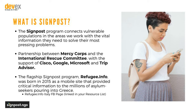The Signpost Program connects vulnerable populations with the vital information they need to solve their most pressing problems. It's very user-centered — we start with a human-centered design process and design our content strategies based on the types of information people need and are asking for, rather than a more prescriptive information dissemination strategy. At the global level, we are a partnership between Mercy Corps and the IRC, supported by Cisco, Google, Microsoft, and TripAdvisor, among others, with both financial and in-kind support.